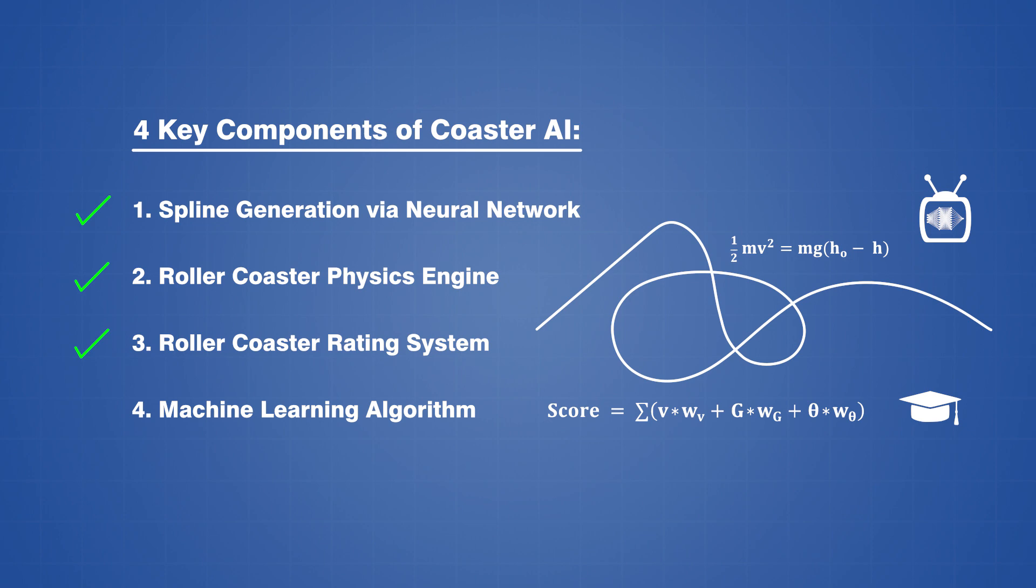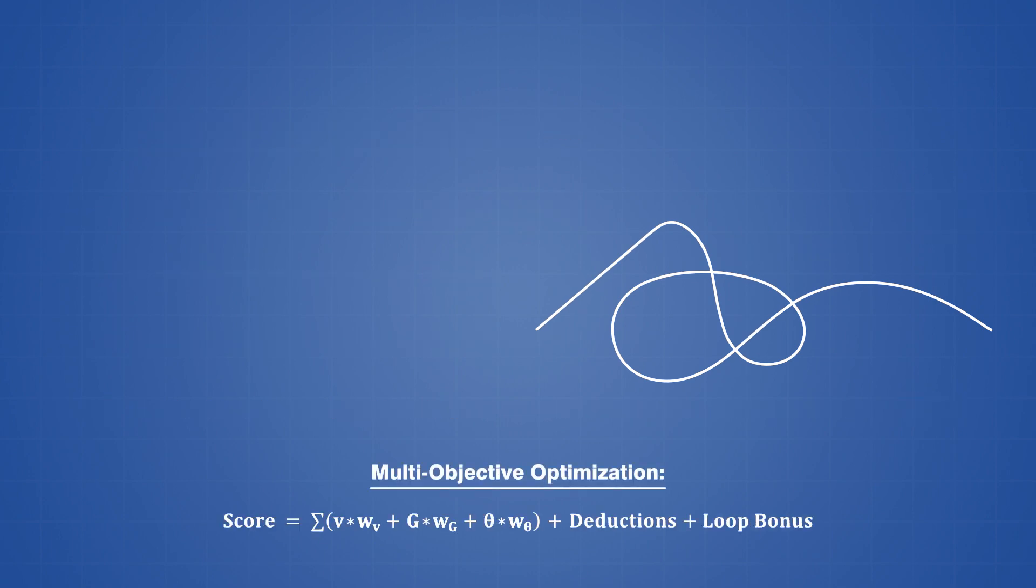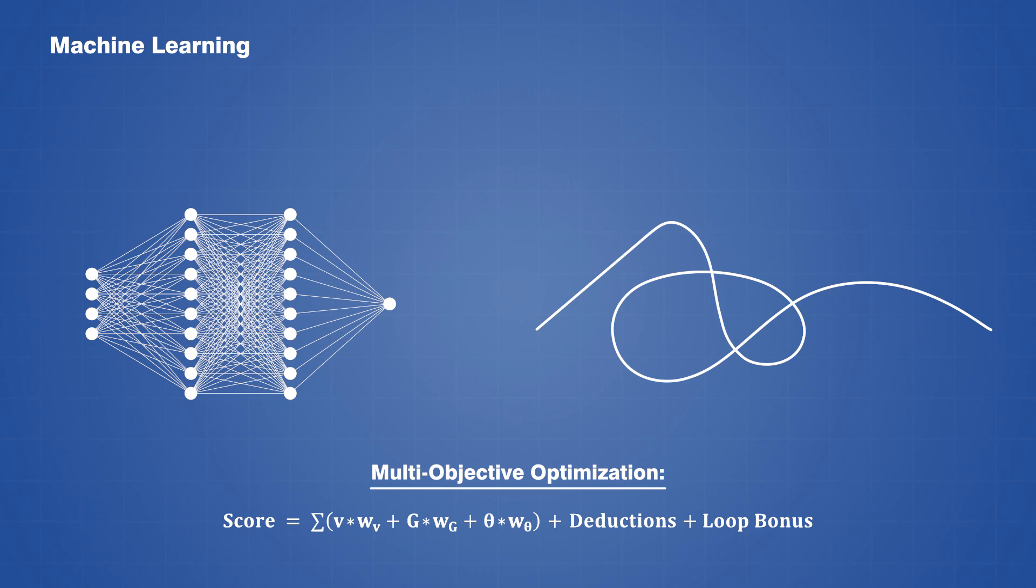The last thing that we need to complete the program is now a machine learning algorithm, which we will use to train the bot so it can learn how to make the best possible design. This is basically just an optimization problem, and our ultimate goal here is to find some combination of weights and biases within the neural network that will allow it to produce a track spline with the highest possible score.